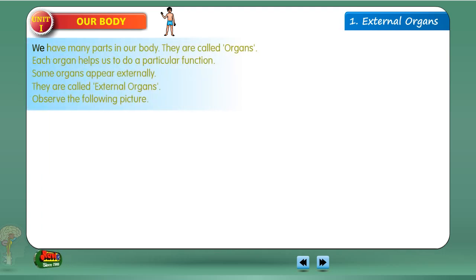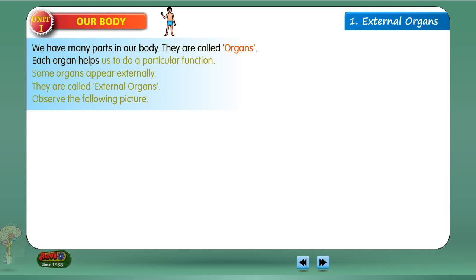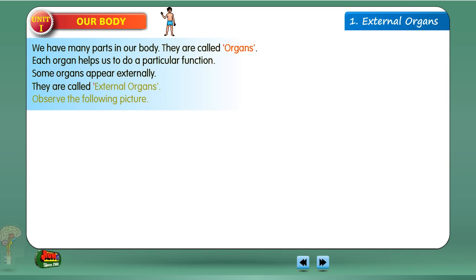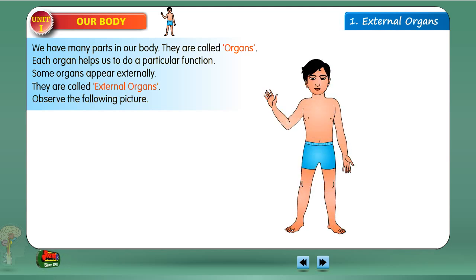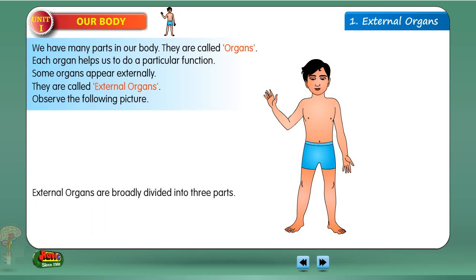We have many parts in our body. They are called organs. Each organ helps us to do a particular function. Some organs appear externally. They are called external organs. Observe the following picture. External organs are broadly divided into three parts.